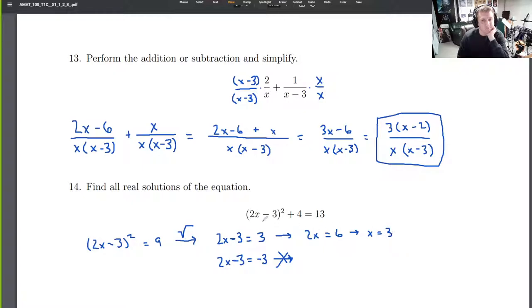And that should be it. If we plug that in, we get, what do we get? We get 6 minus 3, so 3. 3 squared is 9. 9 plus 4 is 13. 13 equals 13. We're good. There's one. There's one solution right there.